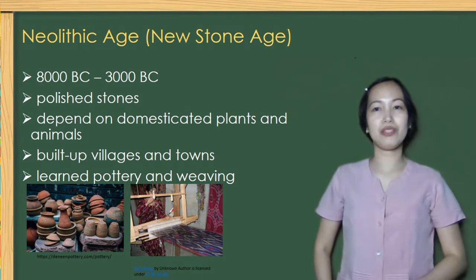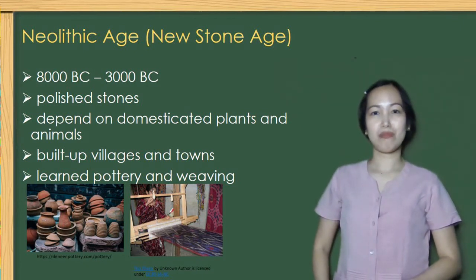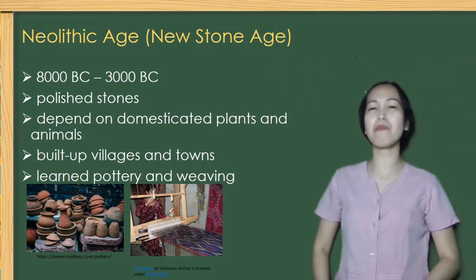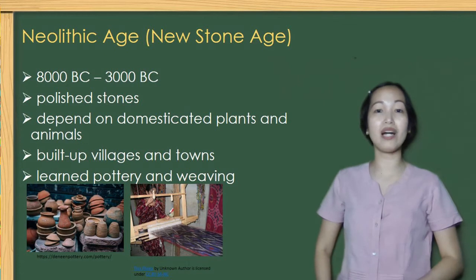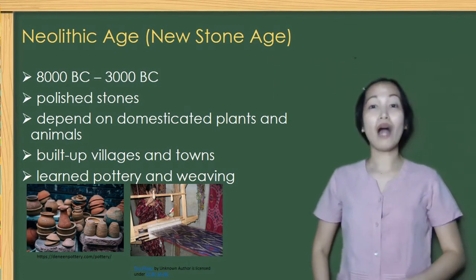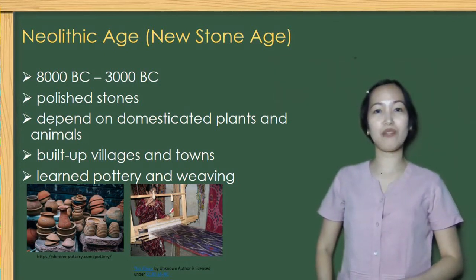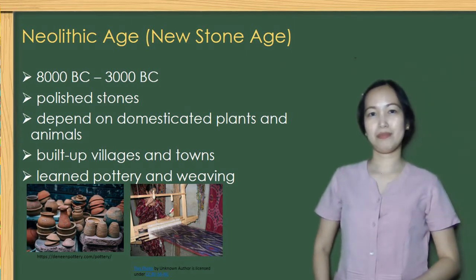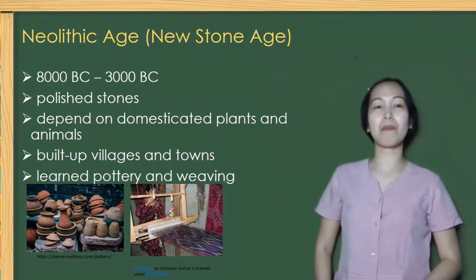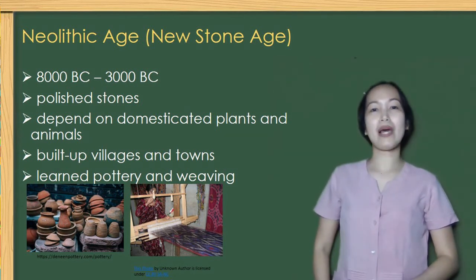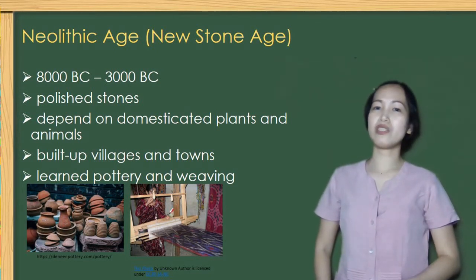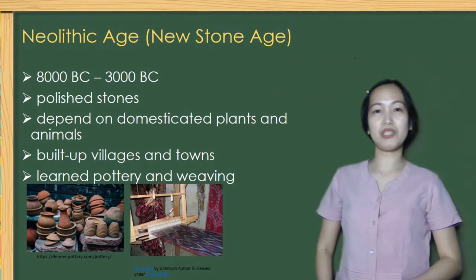The next period is the Neolithic Age. During this period, there was a wide-scale transition of many human cultures from a lifestyle of hunting and gathering to agriculture and settlement, which eventually led to population increase. The people in this era were using polished stone, they domesticated plants and animals, built up villages and towns, and they learned pottery and weaving.